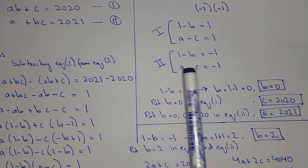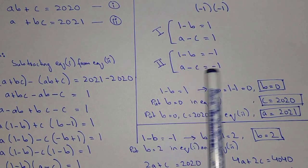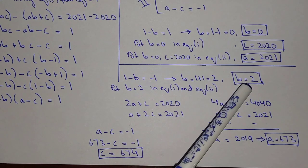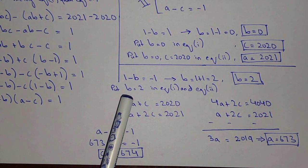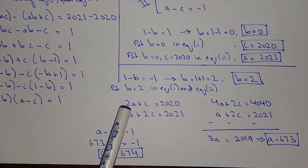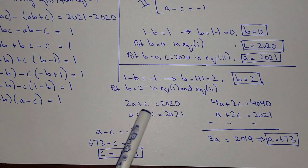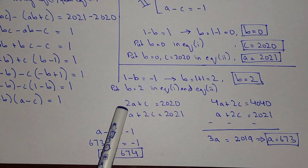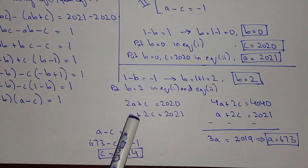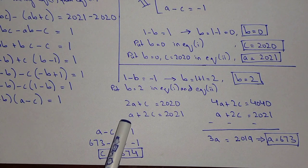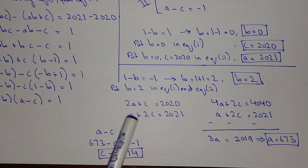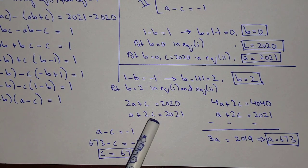Now finding the values of A, B, and C from case 2. From 1 minus B equals minus 1, the value of B equals 2. Substituting B equals 2 into equation 1 gives 2A plus C equals 2020. Substituting B equals 2 into equation 2 gives A plus 2C equals 2021.